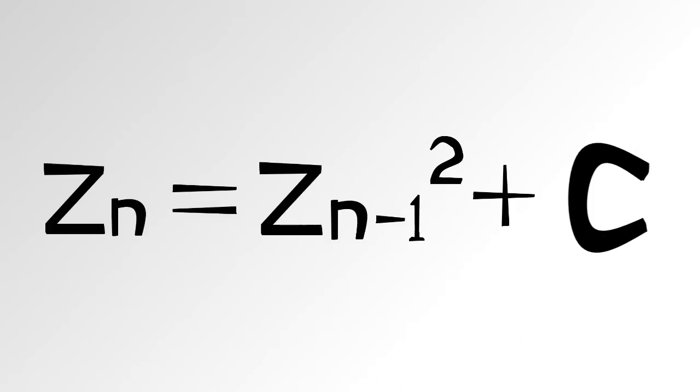Oh, but it gets cooler. Remember our recursive formula from before? The c here represents a complex number. Let's use our good old friend, negative 1.5 plus i.